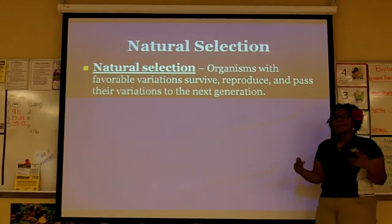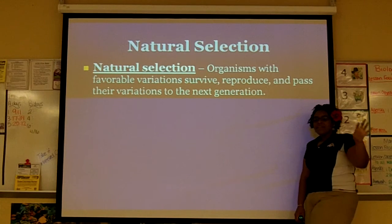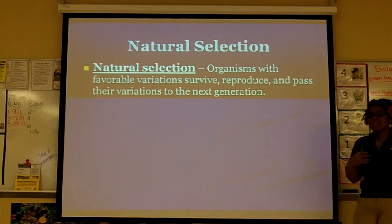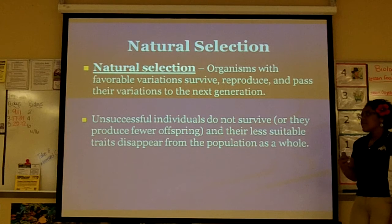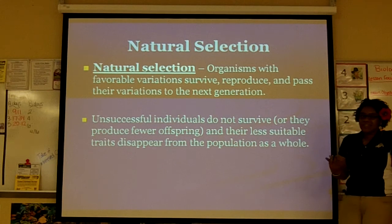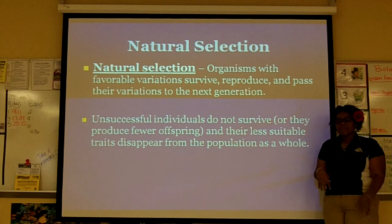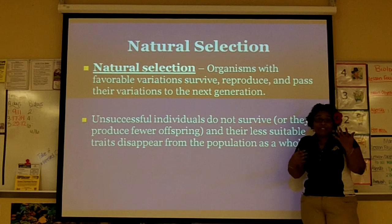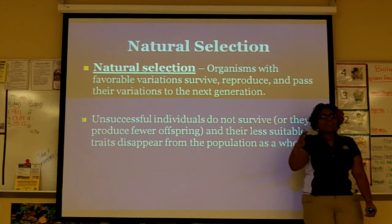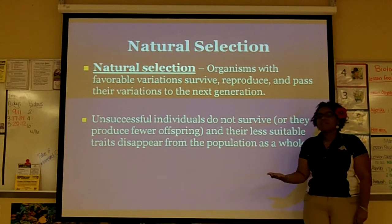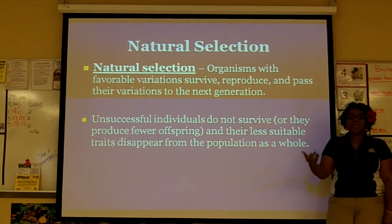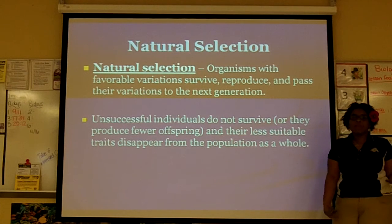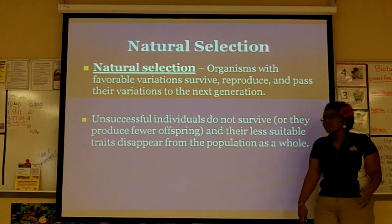In natural selection, you have traits and those traits are naturally selected — you're able to use that trait in your environment. Organisms with favorable variations survive, reproduce, and pass on those traits to the next generation. If you're unsuccessful and your traits aren't going to help you in that environment, you're not going to survive. Ultimately, that trait is not going to get passed on; you won't produce many offspring, or maybe you won't find a mate. Over time, that trait will disappear from the population, because it's not being selected.